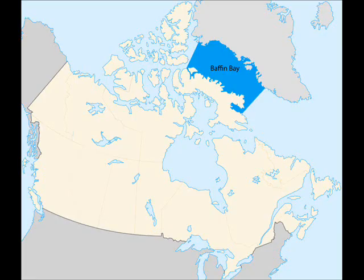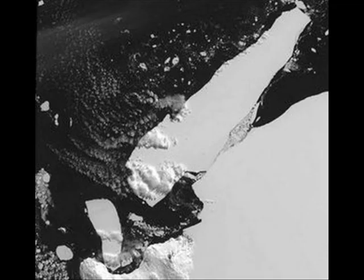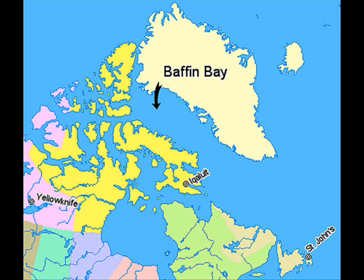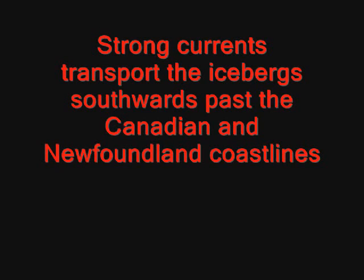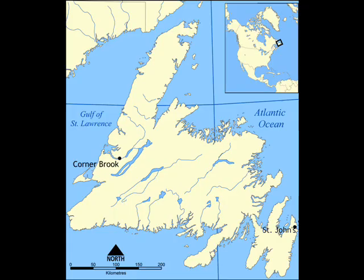When the glaciers reach the sea on the north-west coast of Greenland, large chunks of ice are broken off and enter the North Atlantic Sea. The coastal current transports the large masses of ice northwards at first towards Baffin Bay, before the winds and currents change direction and transport the icebergs south along the East Canadian coastline past Newfoundland towards the North Atlantic Sea.